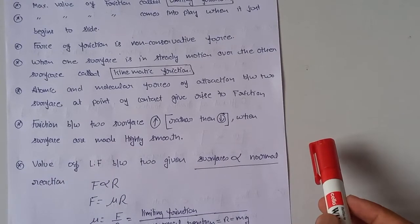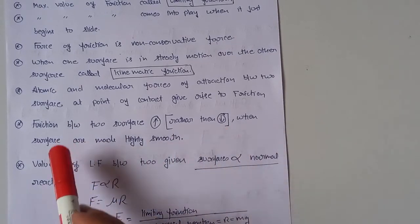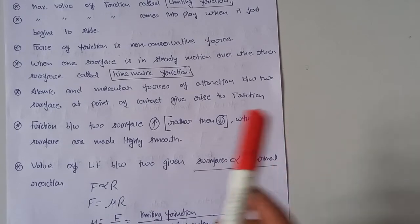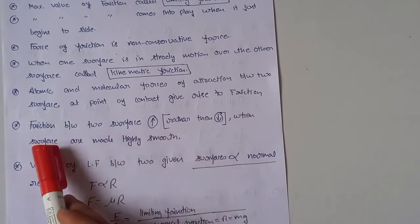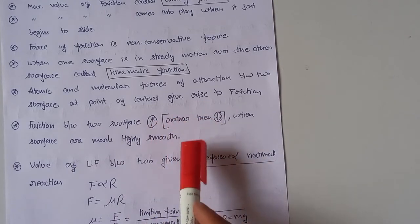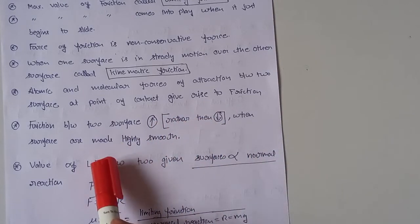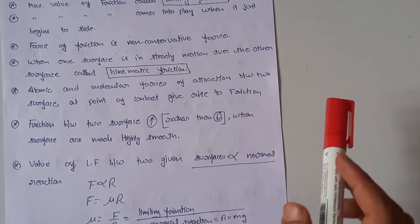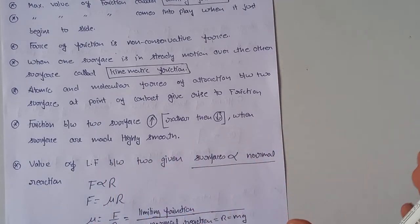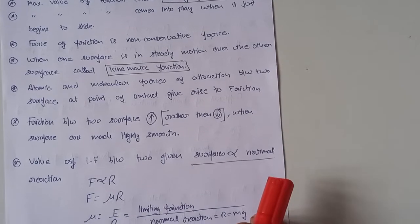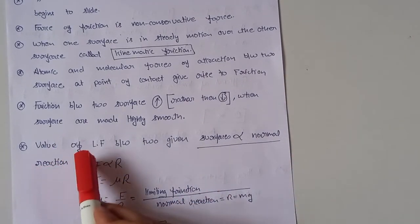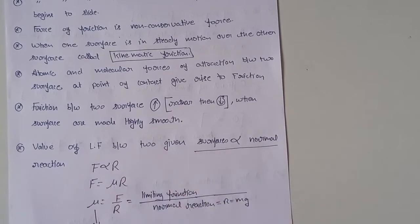Our next key point: friction between two surfaces actually increases when the surfaces are made highly smooth — rather than decreasing. Keep this in mind. When we make the surfaces highly smooth, it increases the area of contact.